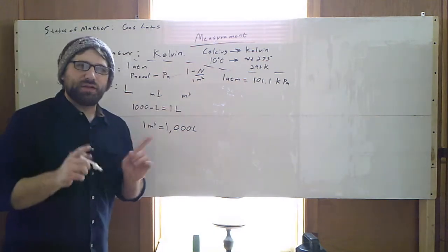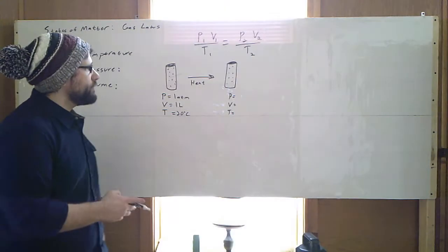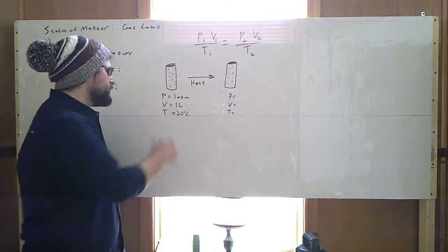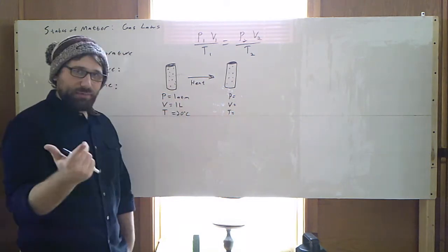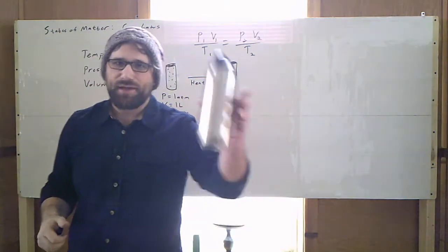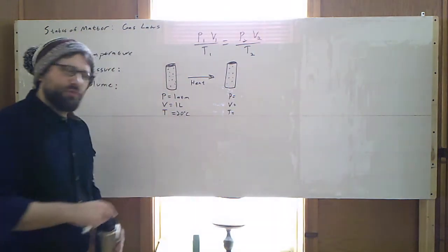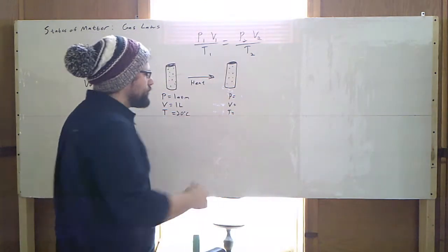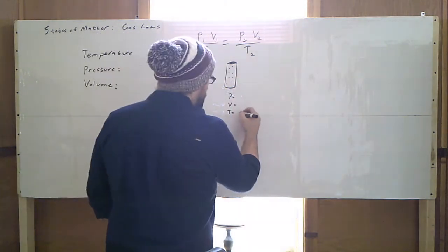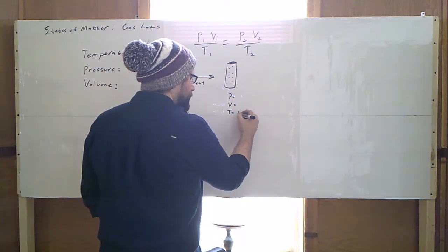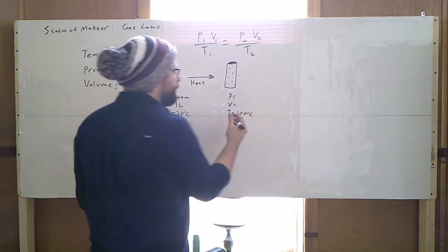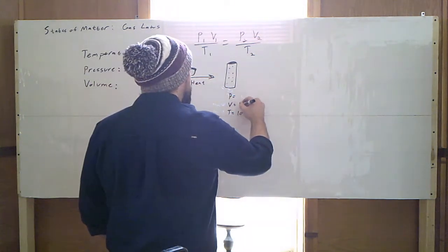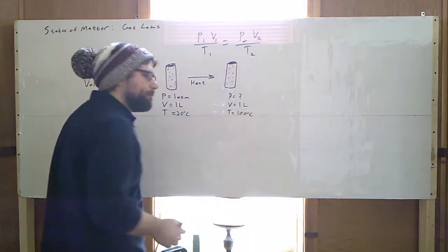So now that we have our measurements, let's look at a sample problem. Our sample problem is we have a canister of gas that is starting out at room temperature, room conditions. Its pressure is going to be one atmosphere. Its volume is going to be one liter. So we're imagining that this, sitting at a temperature of about 20 degrees Celsius, gets put in a pot of boiling water. The temperature is going to increase to 100 degrees Celsius. The volume is going to stay the same. Obviously it's a sealed container, so our volume can't change. What will our new pressure be?